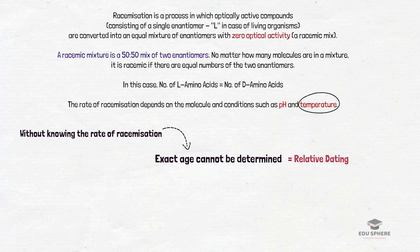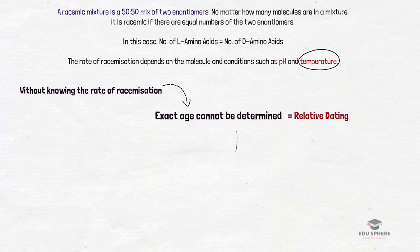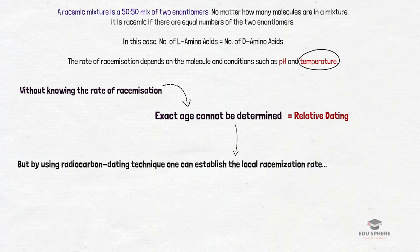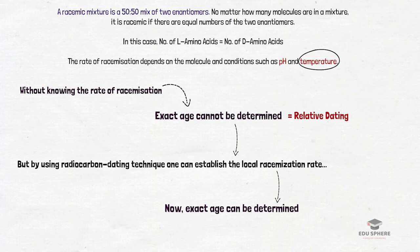This can be used as a relative dating method to compare the age of different objects found in a particular site when you don't know the rate of racemization. But by using radiocarbon dating technique on bone samples at a particular site and by measuring the relative proportions of L and D isomers, one can establish what the local racemization rate is. This calibration is then used to date bone samples beyond the time range of radiocarbon. And since we have got the local racemization rate now, we can now establish the absolute date of an object.